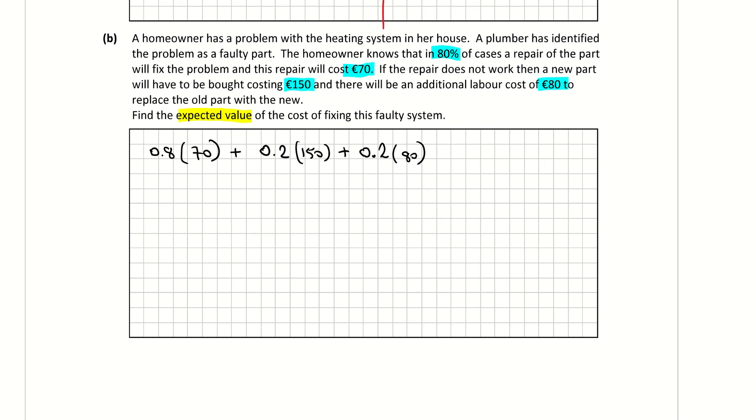So just to clarify, this part here is the fixed, and this part here is the replaced, when it's not fixed. And it's not fixed 20% of the time, and it is fixed 80% of the time. And when I type that into my calculator, add them together, I'm getting an expected value of €102. So that's part B.